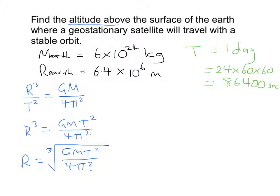So now for our calculation, r is equal to the cube root of—now let's plug all these values in—G, 6.67×10^-11, times by the mass of the Earth is 6×10^24 times by the period which is 86,400 squared, all divided by 4π squared.